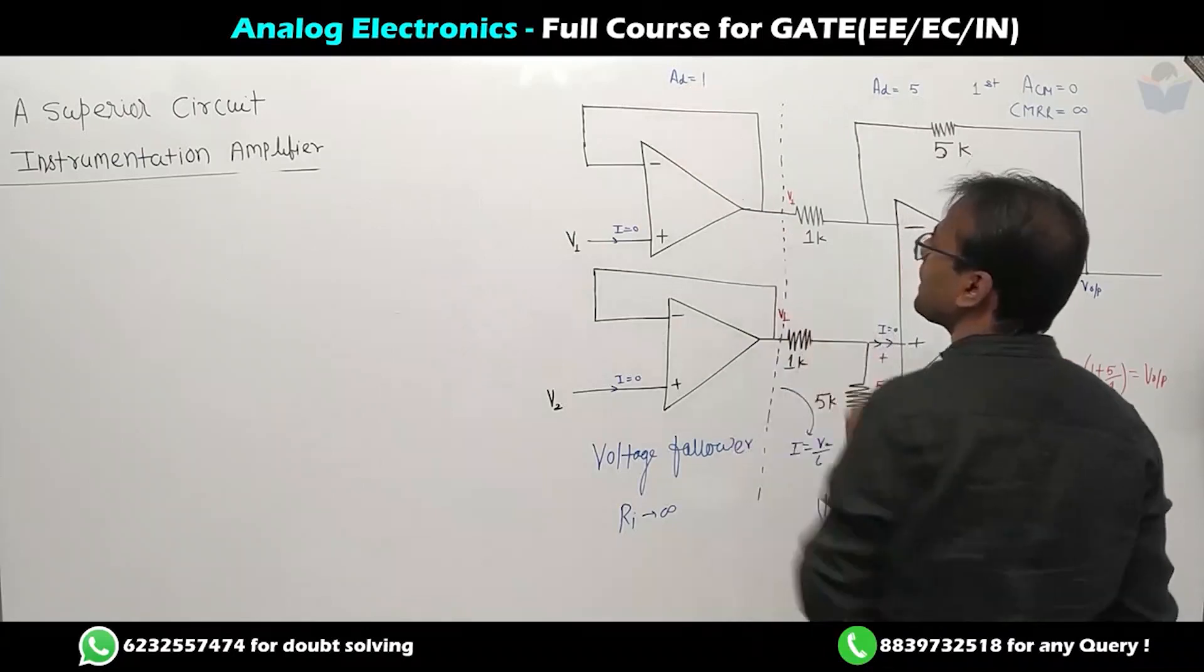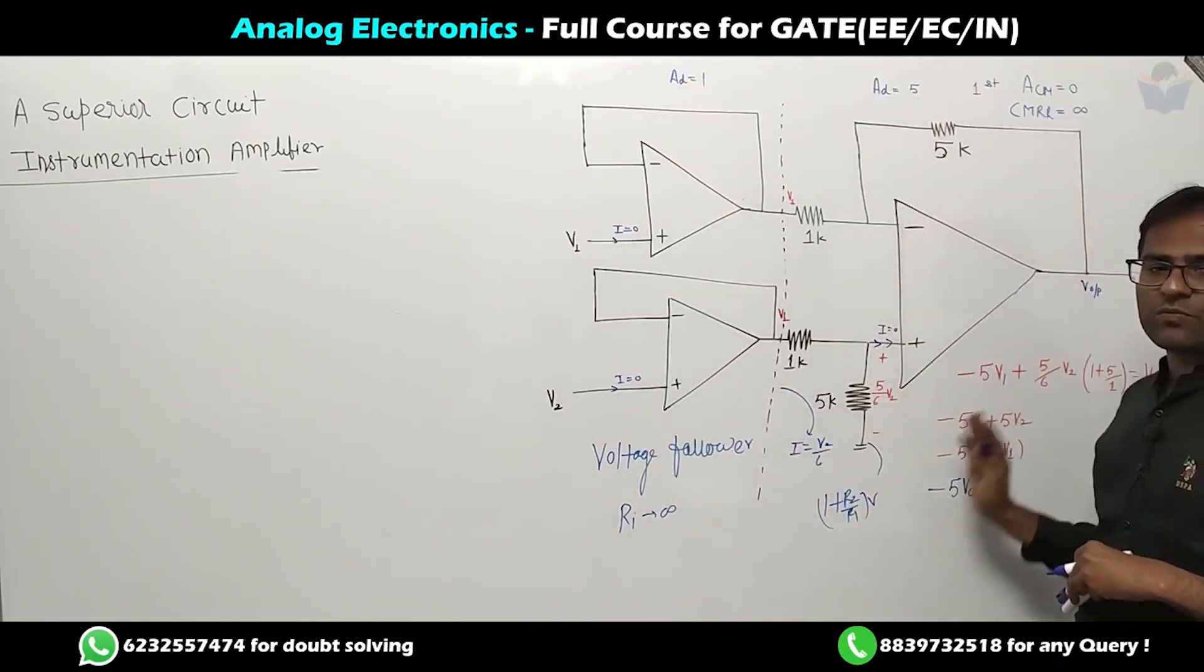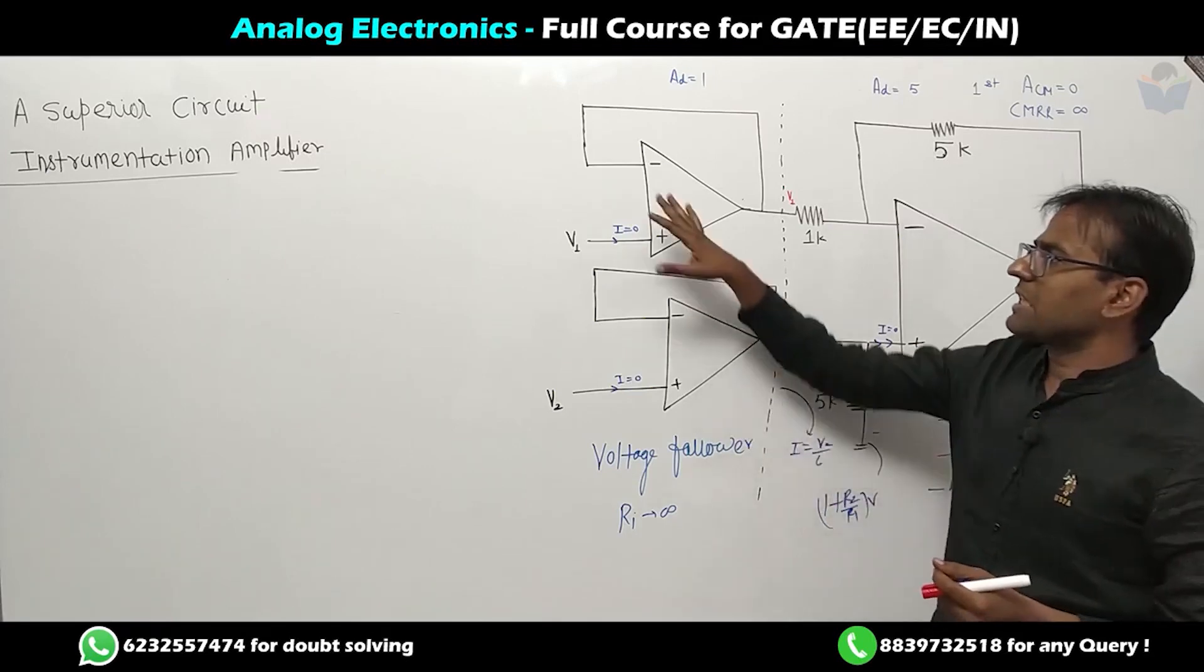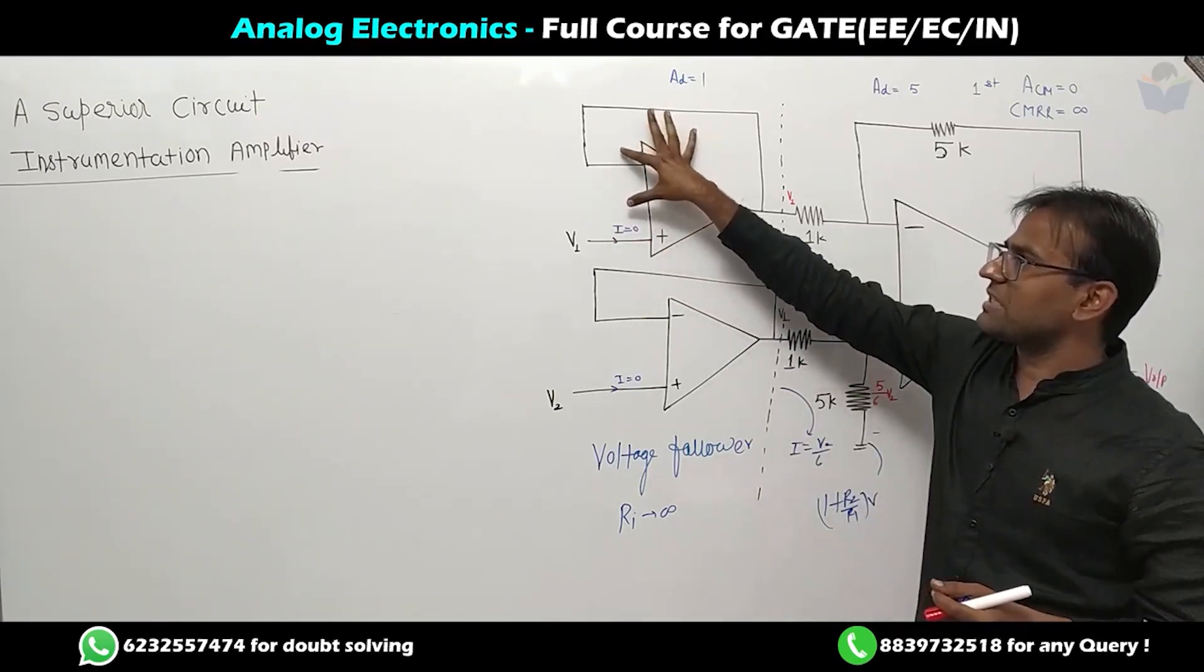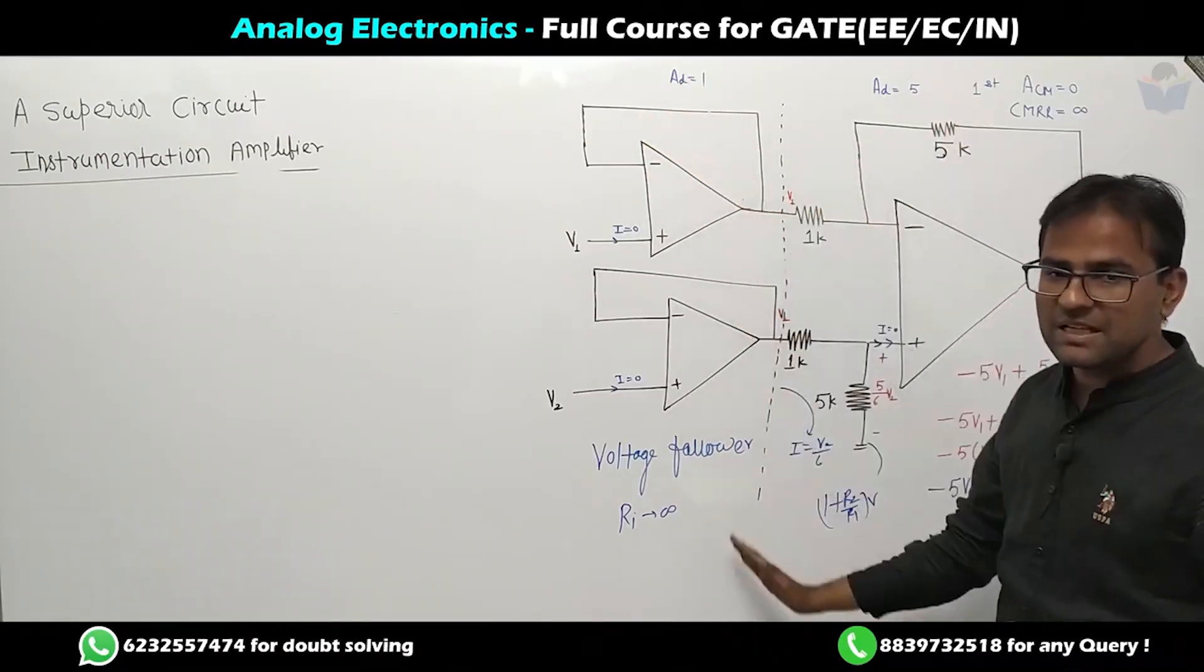This is a unity gain amplifier. To optimize the performance of this system, we add two resistances. The addition of these resistances will make this amplifier - the first stage, second stage is an amplification stage.